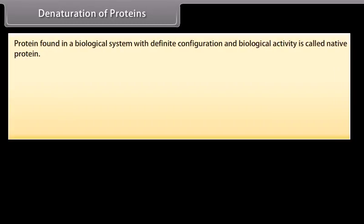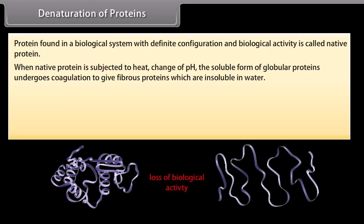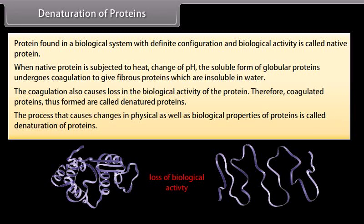Denaturation of proteins: A protein found in a biological system with definite configuration and biological activity is called a native protein. When native protein is subjected to heat or change in pH, the soluble globular protein undergoes coagulation to give fibrous proteins insoluble in water, with loss of biological activity — the coagulated protein is called a denatured protein. The process causing changes in physical and biological properties of proteins is called denaturation — for example, coagulation of egg on boiling and curdling of milk.